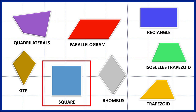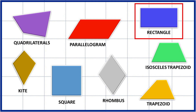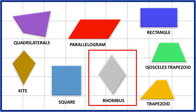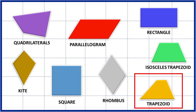A square is a quadrilateral with 4 equal straight sides and 4 right angles. A rectangle is a quadrilateral whose angles are right angles, especially one with adjacent sides of unequal length. A parallelogram is a special type of quadrilateral that has both pairs of opposite sides parallel and equal. A rhombus is a quadrilateral whose all sides have the same length. A trapezoid or trapezium is a quadrilateral with one pair of sides parallel.